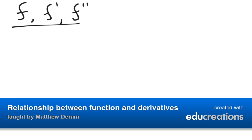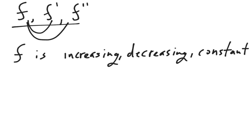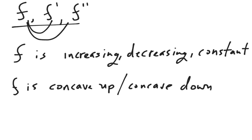In this video, we're going to talk about a function and the relationship of a function to both its first derivative and its second derivative. Specifically, we'll talk about when f is increasing, decreasing, and constant, and also when f is concave up or concave down.